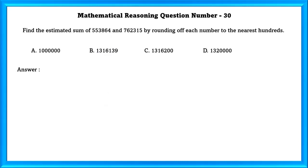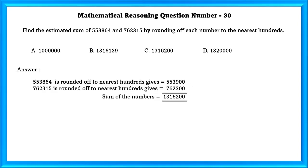Mathematical reasoning question number 30: Find the estimated sum of these two numbers by rounding off each number to the nearest hundreds. First round off each number and then add. If we do that, we get 13,16,200.